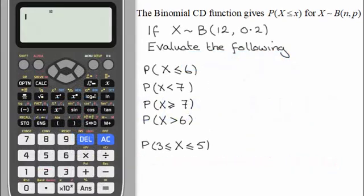To demonstrate this, I've got a Casio ClassWiz emulator displayed here. We have an example where X follows a binomial distribution with number of trials n = 12 and probability of success p = 0.2, and we need to evaluate the following probabilities.